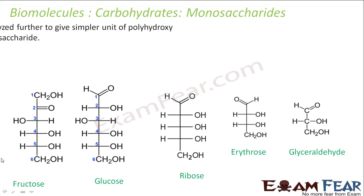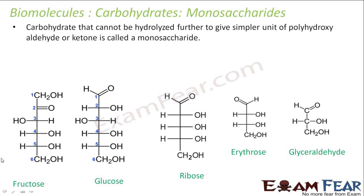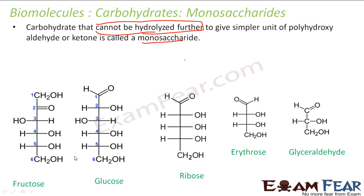What are monosaccharides? Monosaccharides are carbohydrates which cannot be further hydrolyzed to give smaller units of aldehydes or ketones. For example, fructose — if you try to hydrolyze it, nothing will happen; it's already a small unit. Other examples are glucose, ribose, erythrose, and glyceraldehyde. All of these are monosaccharides because they cannot be hydrolyzed further.